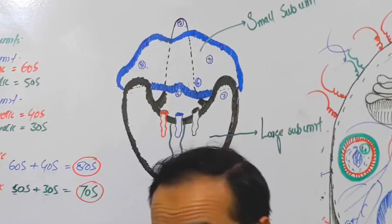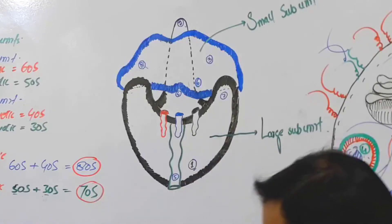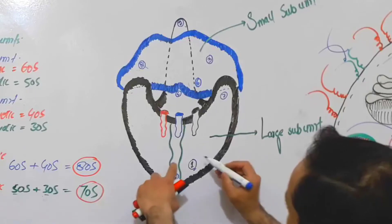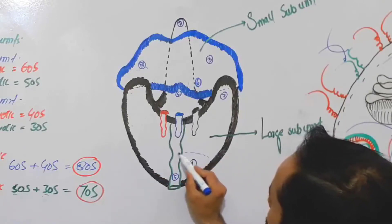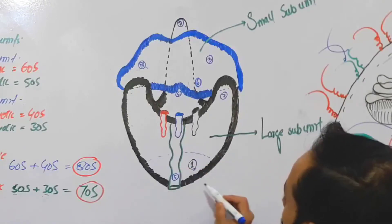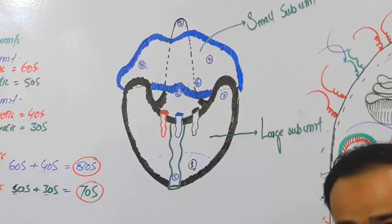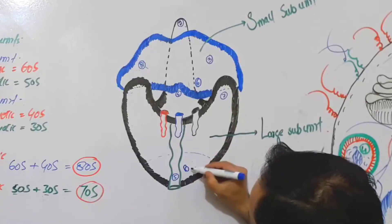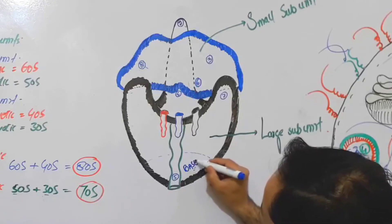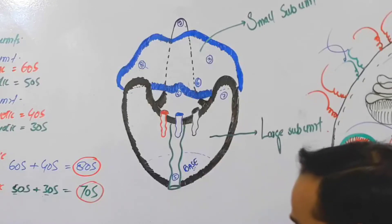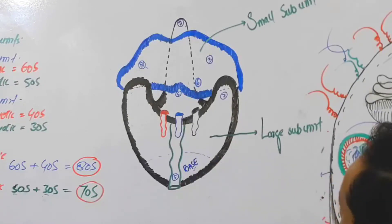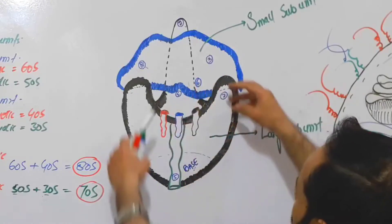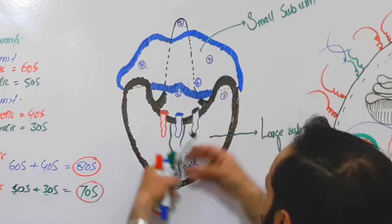Now let's name all these parts. The first part is called the base of the ribosome. This base is located in the large sub-unit.